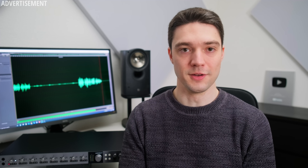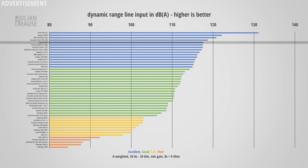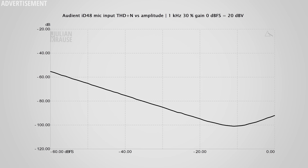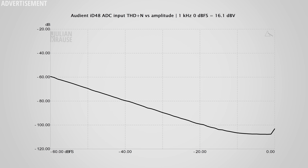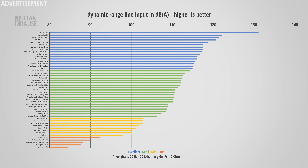Quickly touching on the other measurements: line inputs show essentially the same performance as mic inputs, with a very slight high-frequency rolloff that's unlikely to be audible in practice. Dynamic range is once again in the excellent category, and distortion is not state-of-the-art but there are no complaints. When you bypass the preamps via the ADC input, the frequency response becomes completely flat, distortion components drop below -110 dB, and the dynamic range increases to 121.5 dBA — about 4 dB better than the line inputs.